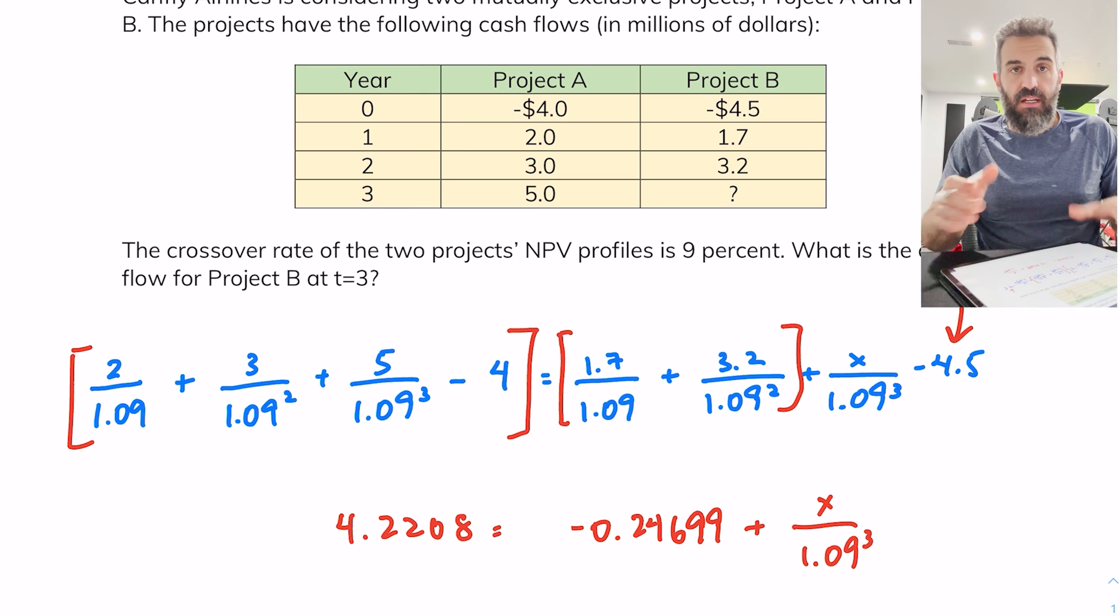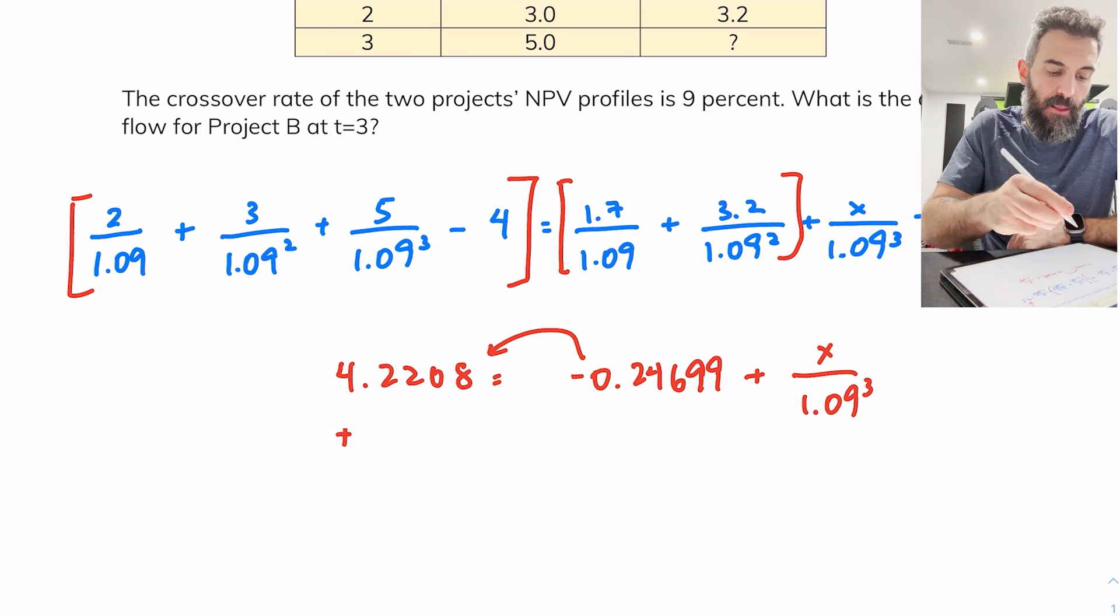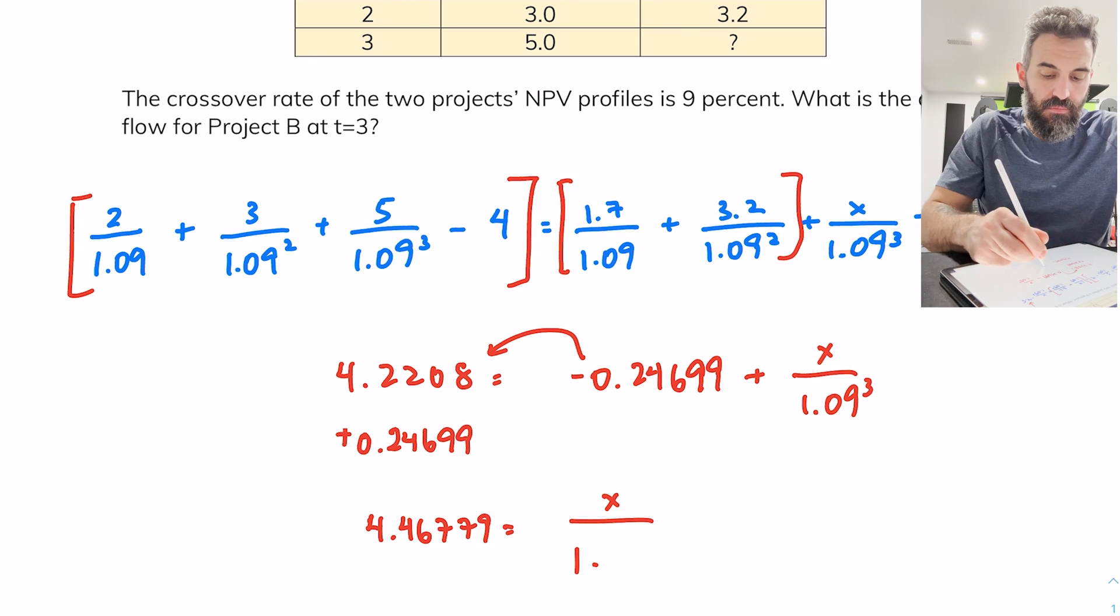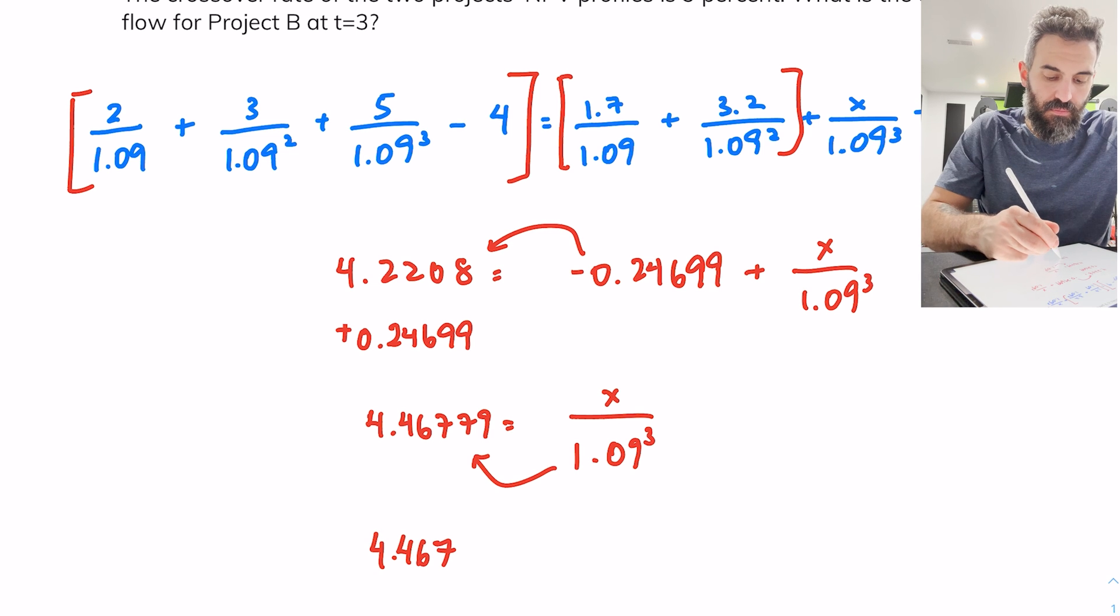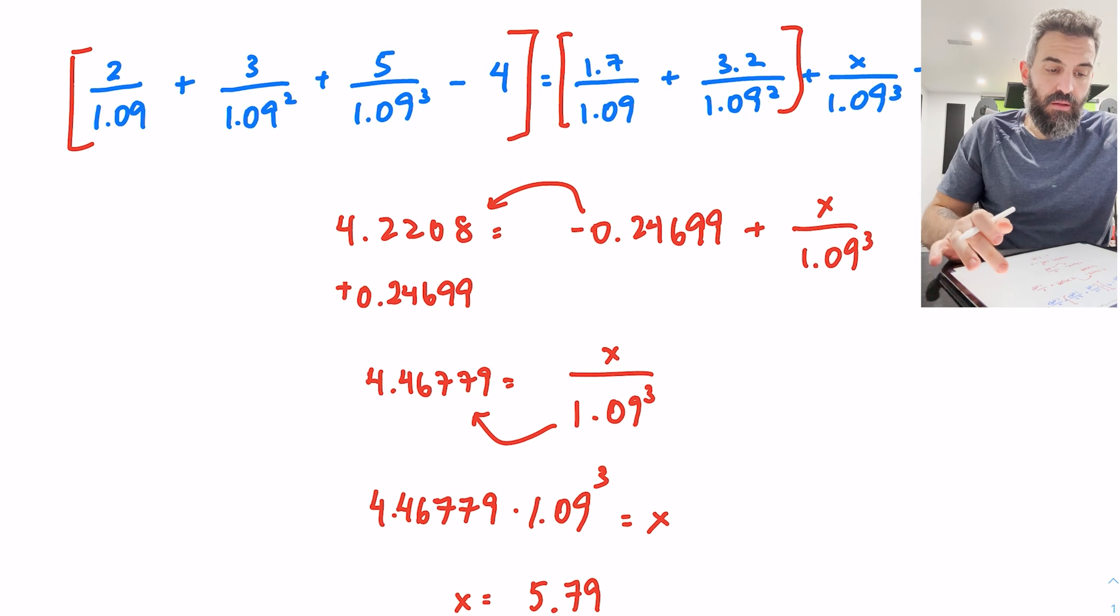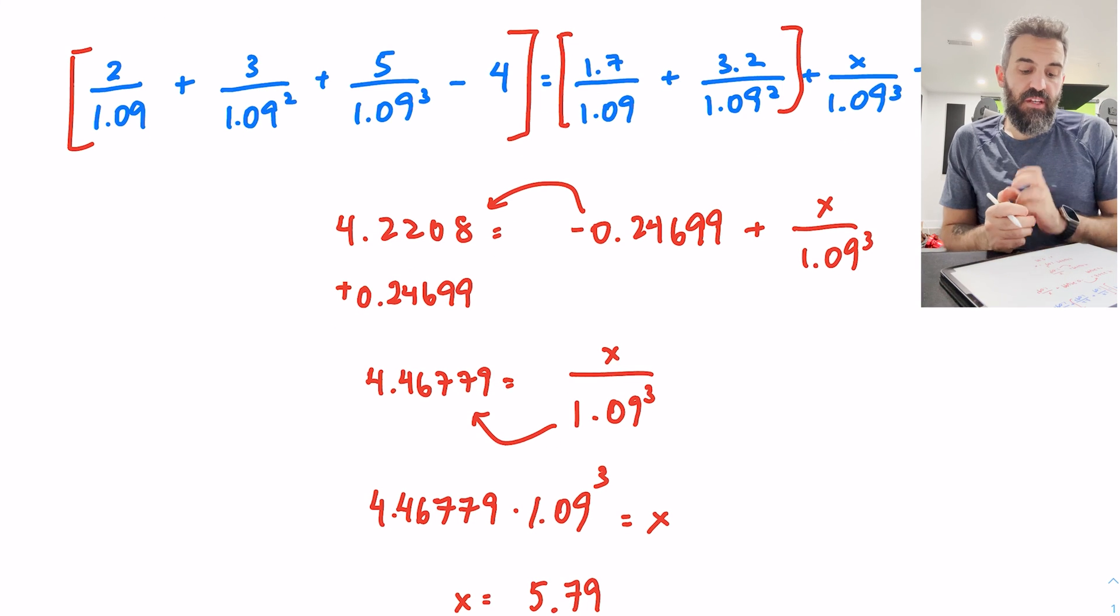So I was able to find that the missing value in year three of Project B is 5.79, and that's how you solve that question.